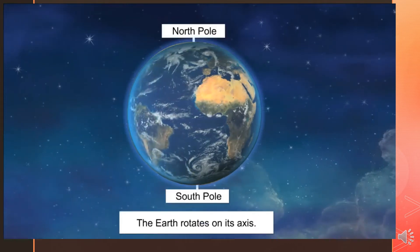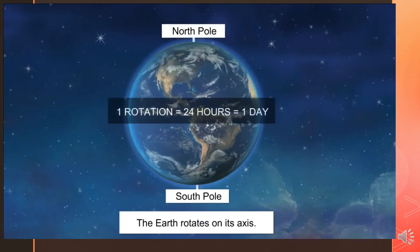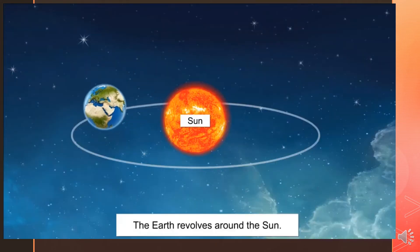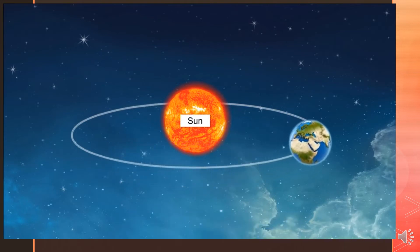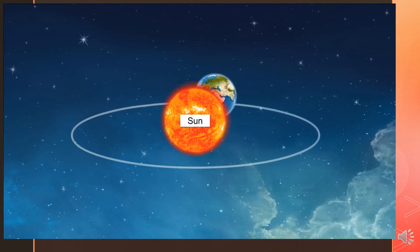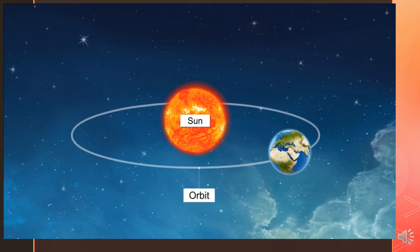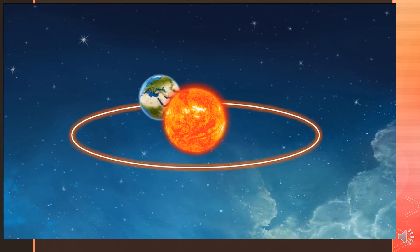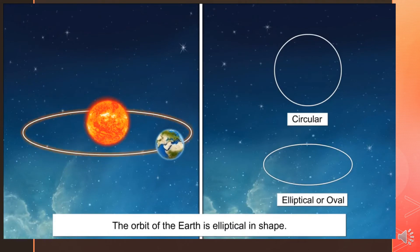We already know that the Earth spins on its axis — this is known as rotation of the Earth, taking about 24 hours. The Earth also revolves around the Sun. When a planet or a moon revolves around an object, it is called revolution. The imaginary path around which an object moves is called its orbit. The Earth revolves around the Sun in its orbit, which is not circular but elliptical or oval in shape.